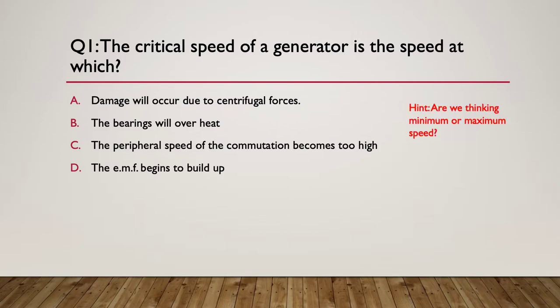Here's your hint. Are we thinking minimum or maximum speed? Critical probably means the minimum speed at which something happens. And here's the EMF — the answer is D: the EMF begins to build up. That's the critical speed. You've got to have enough speed to start to build up the EMF.